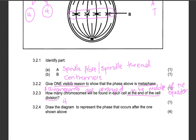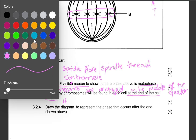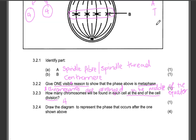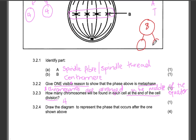In our diagram there are 4 chromosomes, so each daughter cell will have 4. If you were given another example with 8 chromosomes, then each cell at the end of the process would also contain 8 chromosomes — the same principle applies with mitosis.